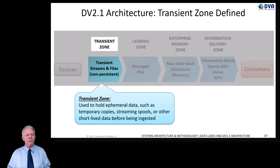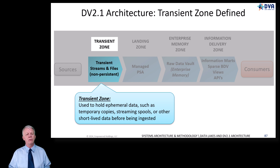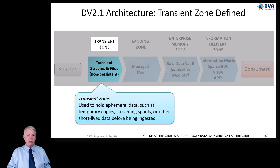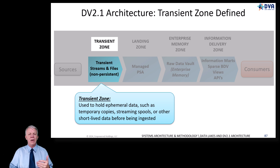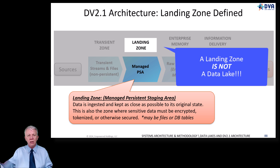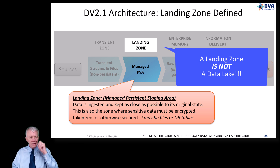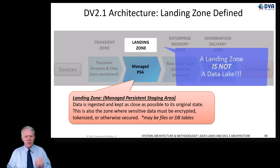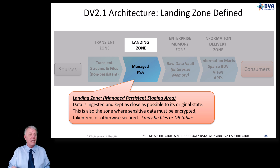The transient zone is used to hold ephemeral data such as temporary copies, streaming pools, or other short-lived data before being ingested. It truly is temporary — it is a design decision to figure out just how temporary that data should be, whether it lives for one minute, two hours, two days, or 24 days — all of those things come back to the business use case. The landing zone — what we call a managed persistence staging area — is where data is ingested and kept as close as possible to its original state. If it's in JSON, leave it in JSON. You probably want to take EBCDIC out and put it in ASCII or CSV. This is also the zone where sensitive data must be encrypted, tokenized, or otherwise secured, and it could be files or database tables.